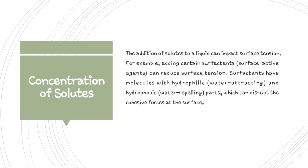The next factor affecting surface tension is concentration of solute. The addition of solute to a liquid can impact surface tension. For example, adding certain surfactants — that is surface active agents — can reduce surface tension. Surfactants have molecules with a hydrophilic (water attracting) and hydrophobic (water repelling) part, which can disrupt the cohesive force at the surface. Another example is dissolving salt in water. As you increase the concentration of salt, the surface tension of water decreases because salt molecules interfere with the cohesive force between water molecules. Therefore, concentration of solute is also an important factor which affects surface tension.